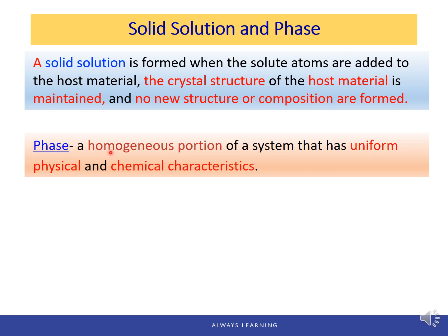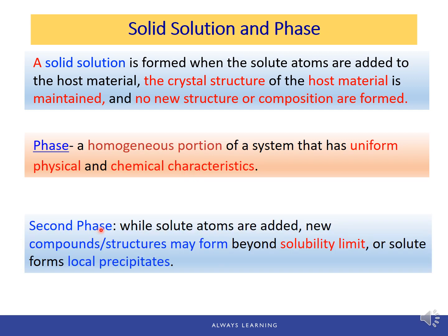A phase is a homogeneous portion of a system that has uniform physical and chemical characteristics. While solute atoms are added, new compounds or structures may form beyond solubility limits. The solubility limit is the maximum concentration of solute atoms that may dissolve in the solvent to form a solid solution. When that limit is reached and we continue to add more solute atoms, they will precipitate out or a new structure forms — a second phase.